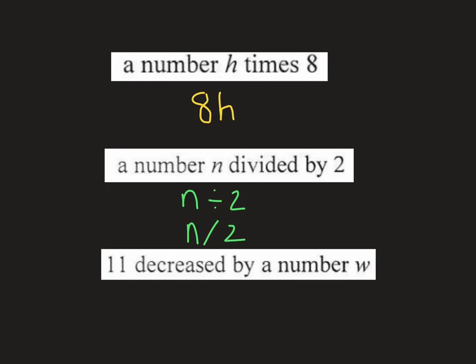And then the last one, 11 decreased by a number w. So decreased means subtract. So we're going to subtract it by a number w. So all you have to do is read it and do exactly what it's telling you to do.